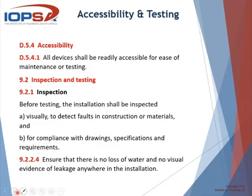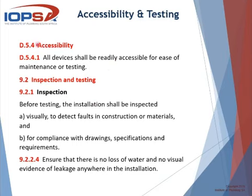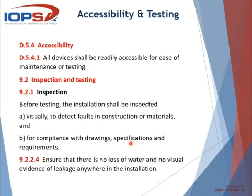Regarding accessibility and testing: SANS 10252 is clear — all devices shall be readily accessible for ease of maintenance and testing. This brings us back to the inspection chamber on the bath. Before testing, the installation shall be inspected visually to detect faults in construction, materials, compliance with drawings, specifications, and requirements — referring back to all standards as well as manufacturer specifications. Also ensure there is no loss of water and no visual evidence of leakage anywhere in the installation.